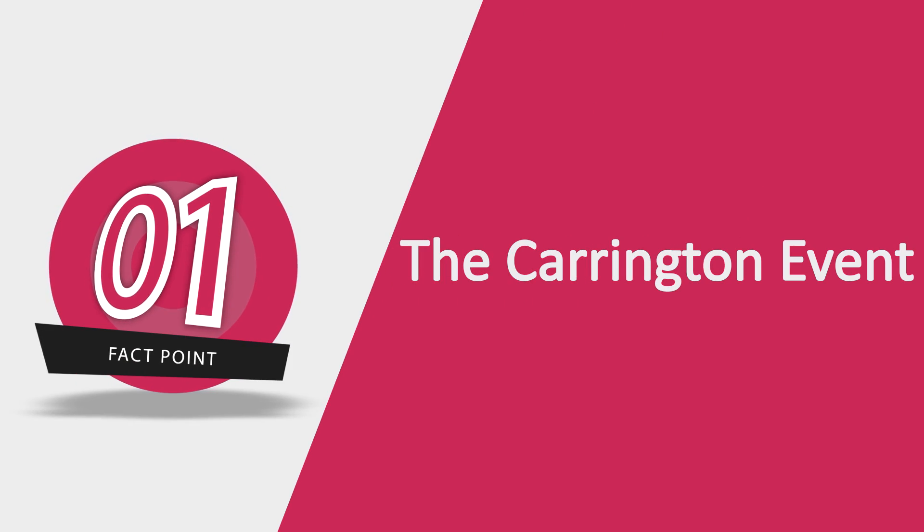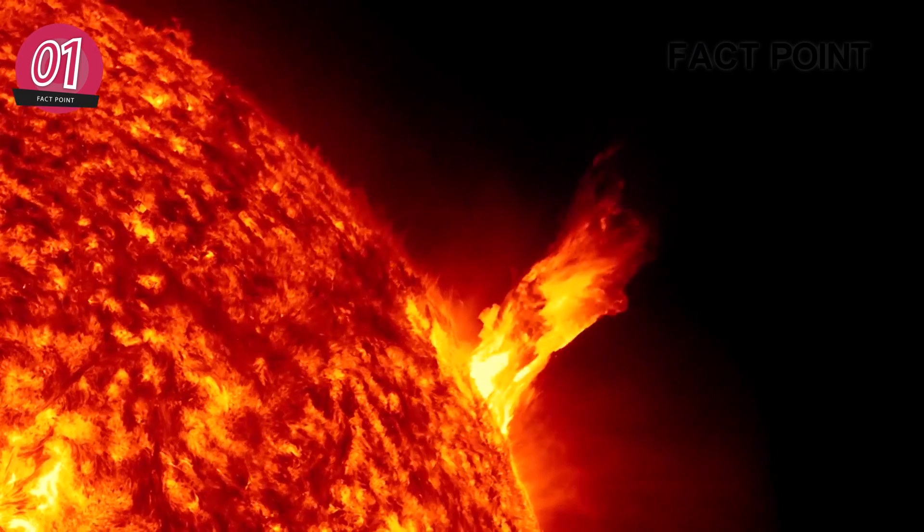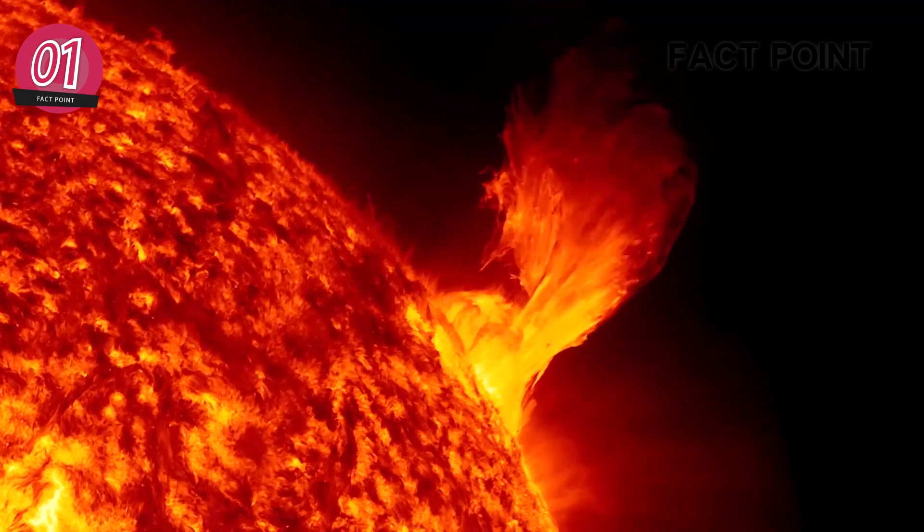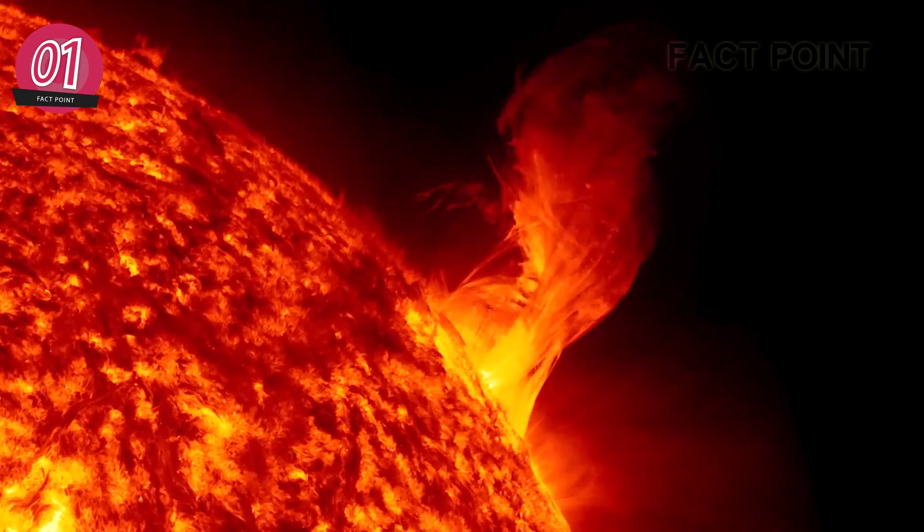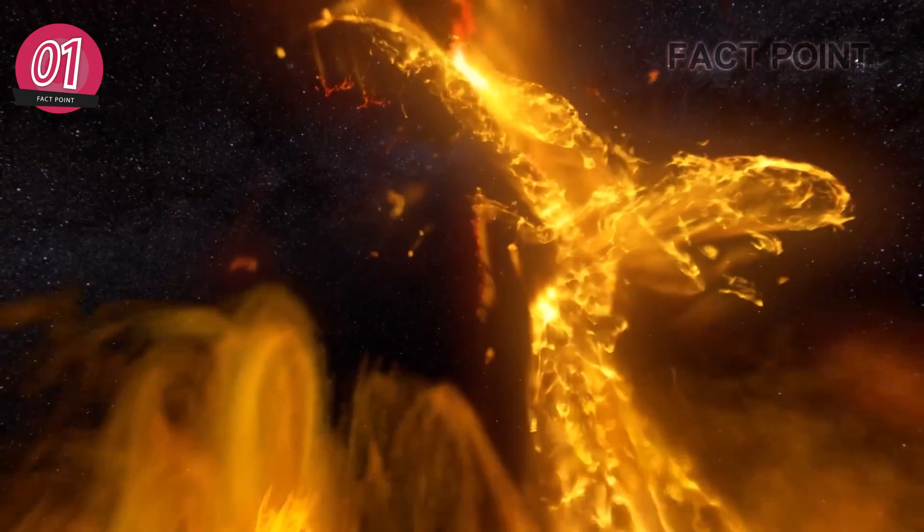Number 1: The Carrington Event. Carrington Event is the name given to a scary massive solar flare called coronal mass ejection or CME. It's one of the possible doomsday scenarios because it actually happened on our planet in the past, fortunately at a much smaller scale.